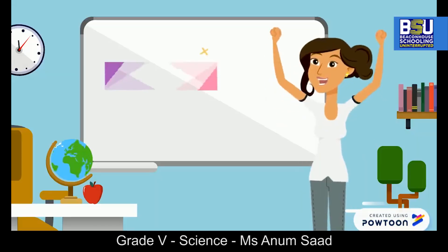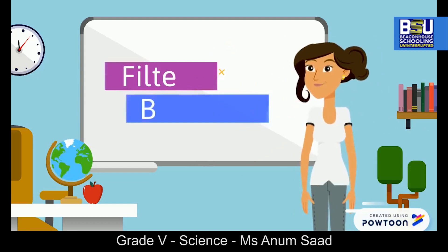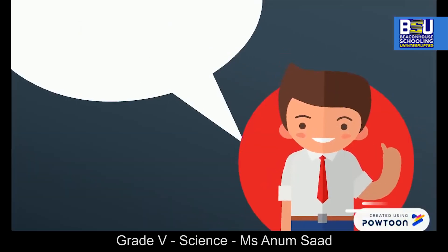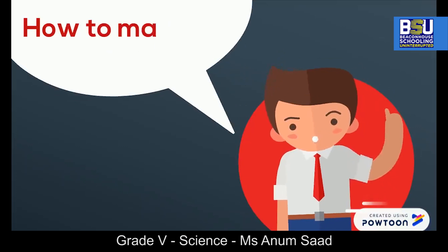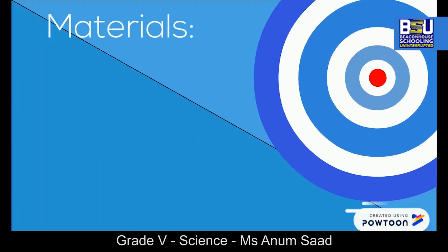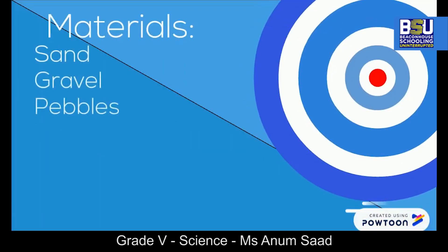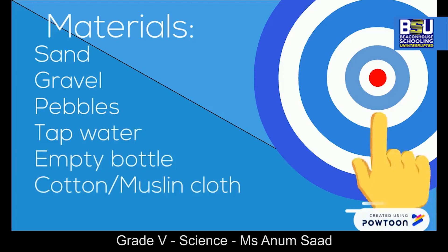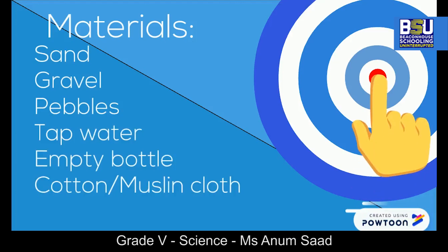Now let's begin with the fun part — let's make your own filter bed at home! Materials required are: sand, gravel, pebbles, tap water, an empty water bottle, and a piece of cotton or muslin cloth.